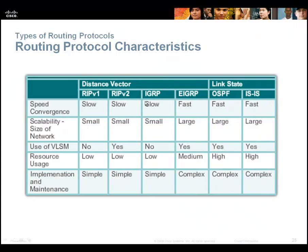Comparing routing protocols: RIP converges very slowly; EIGRP and OSPF converge very fast. For scalability, RIP has a maximum hop count of 15, so you can't have more than 15 routers. OSPF and EIGRP scale very large. RIP version 1 doesn't support VLSM; version 2 does, as do EIGRP and OSPF. RIP doesn't use many resources; EIGRP uses a bit more; OSPF uses the most, since each router maintains a map of the entire network requiring more CPU cycles. For maintenance, RIP is easy to implement with only a few commands, while EIGRP and OSPF are complex — you can filter messages and be very specific, which takes effort.